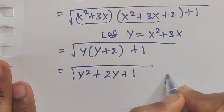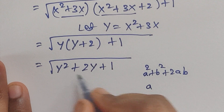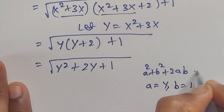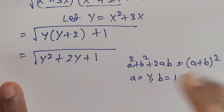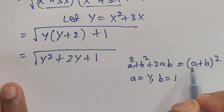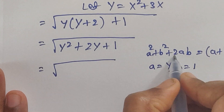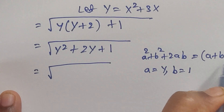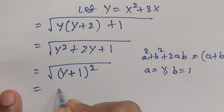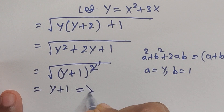This is in the form of a² plus 2ab plus b², where a equals y and b equals 1. Since a² plus 2ab plus b² equals (a plus b)², we can write this as (y plus 1)². Taking the square root, the square cancels and we get y plus 1.